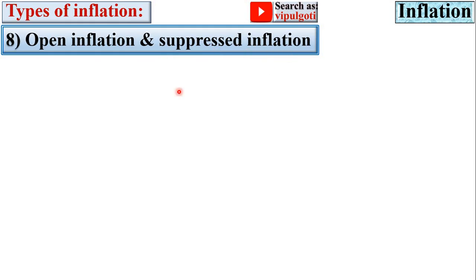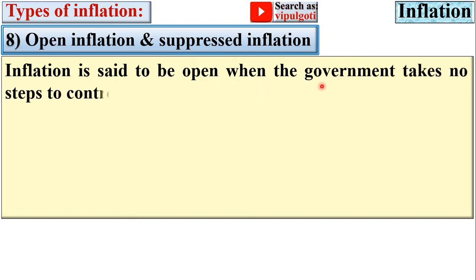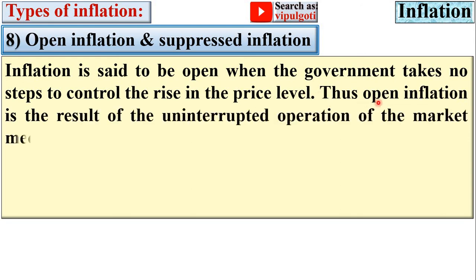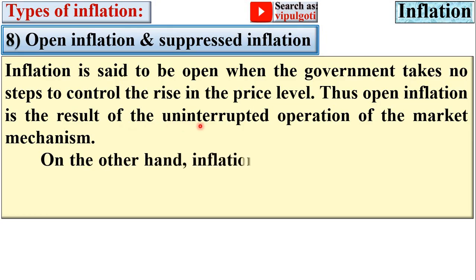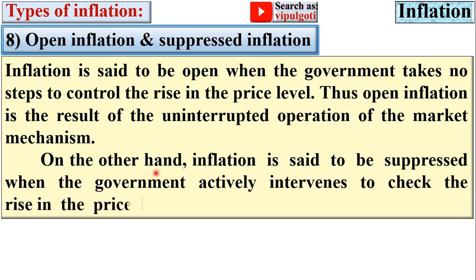Open inflation occurs when the government takes no steps to control the rise in the price level, and is a result of the uninterrupted operation of the market mechanism. Suppressed inflation, on the other hand, is when the government actively intervenes to check the rise in the price level. In open inflation, the government does not intervene at all, whereas in suppressed inflation, government actively intervenes.